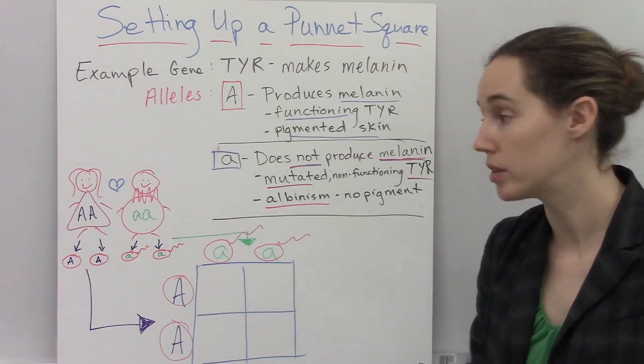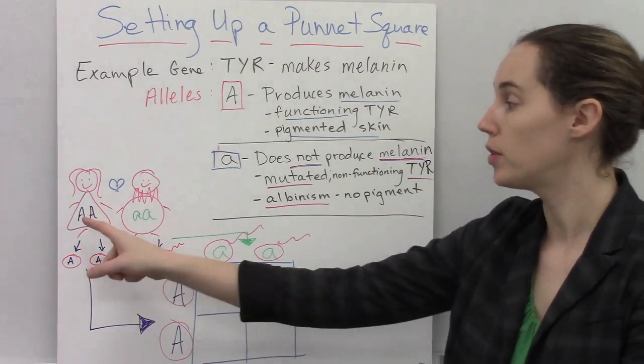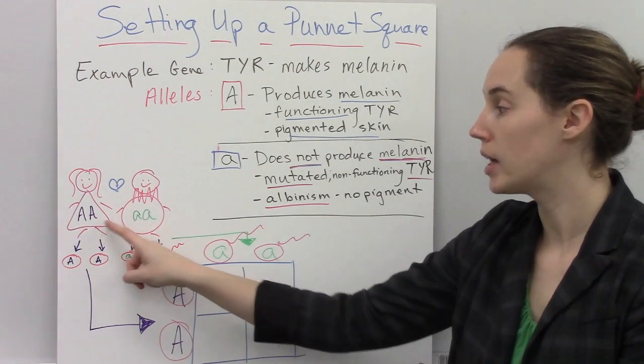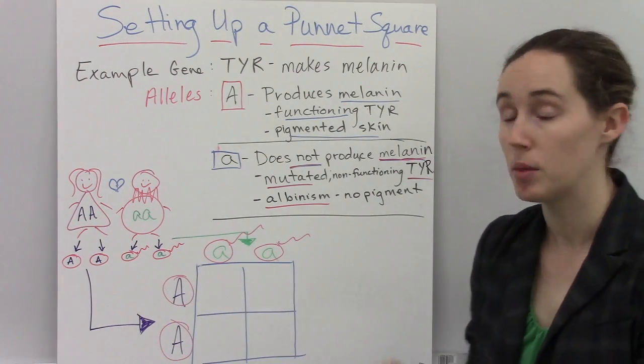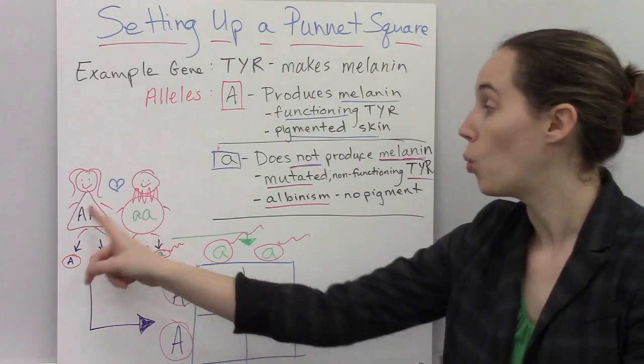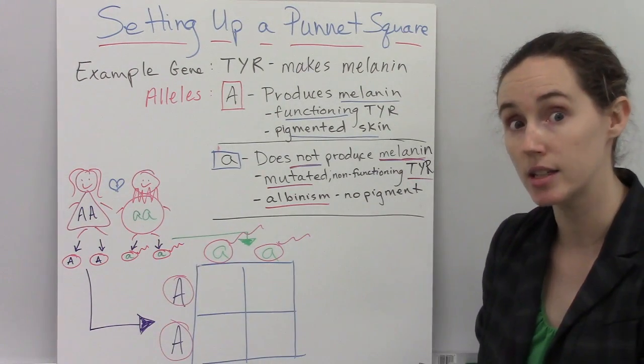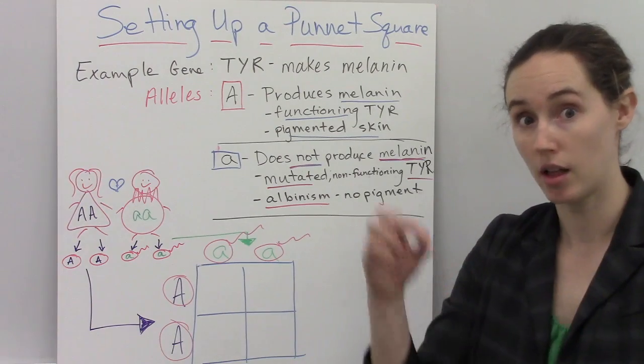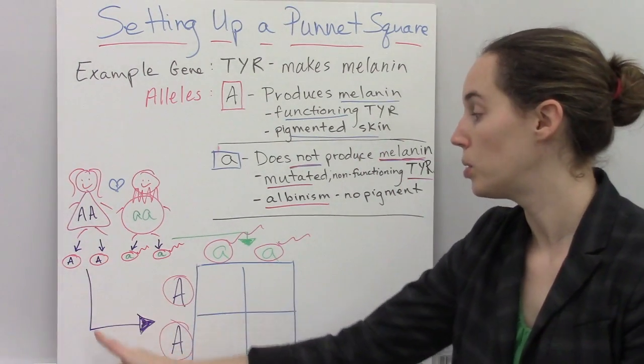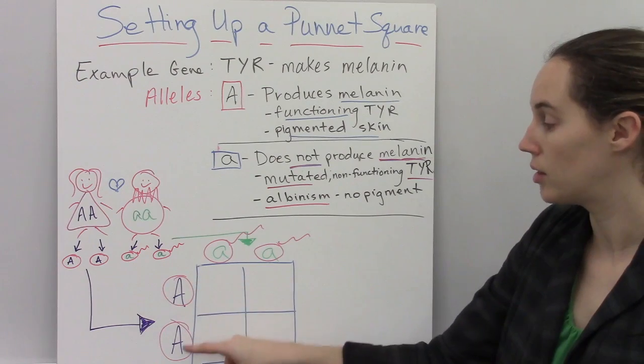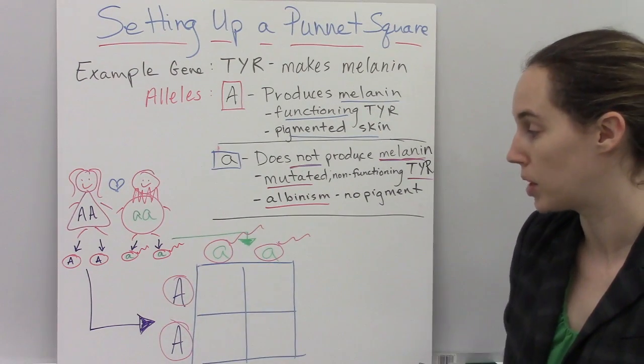Now it depends on who our parents are. So in our example, our female has a homozygous dominant genotype. Based on law of segregation, one of those copies will go down into each one of her eggs. And we're going to put those egg possibilities next to the rows of the Punnett square.